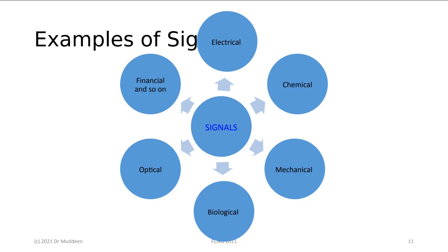We also have optical signals and systems. Some communication systems right now work on light — pulses of light — so the signal doesn't have to be electrical. It can be bursts of light. We also have financial systems. The stock market is a type of system: the input and output are values of shares, and the system itself behaves in such a way that it could go up, go down, or get very unstable depending on the signal coming in. In fact, there are computer programs used in the stock market based on signals and systems theory that electrical engineers have been using for years.